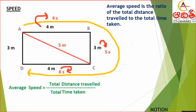Average speed is represented by writing V with 'av' as a subscript — this 'av' represents average and V represents speed. Average speed is the total distance travelled divided by the total time taken. For A to C, the total distance is 4 + 3 + 4 = 11 meters, and the total time is 4 + 5 + 6 = 15 seconds, giving an average speed of 11/15 meter per second.